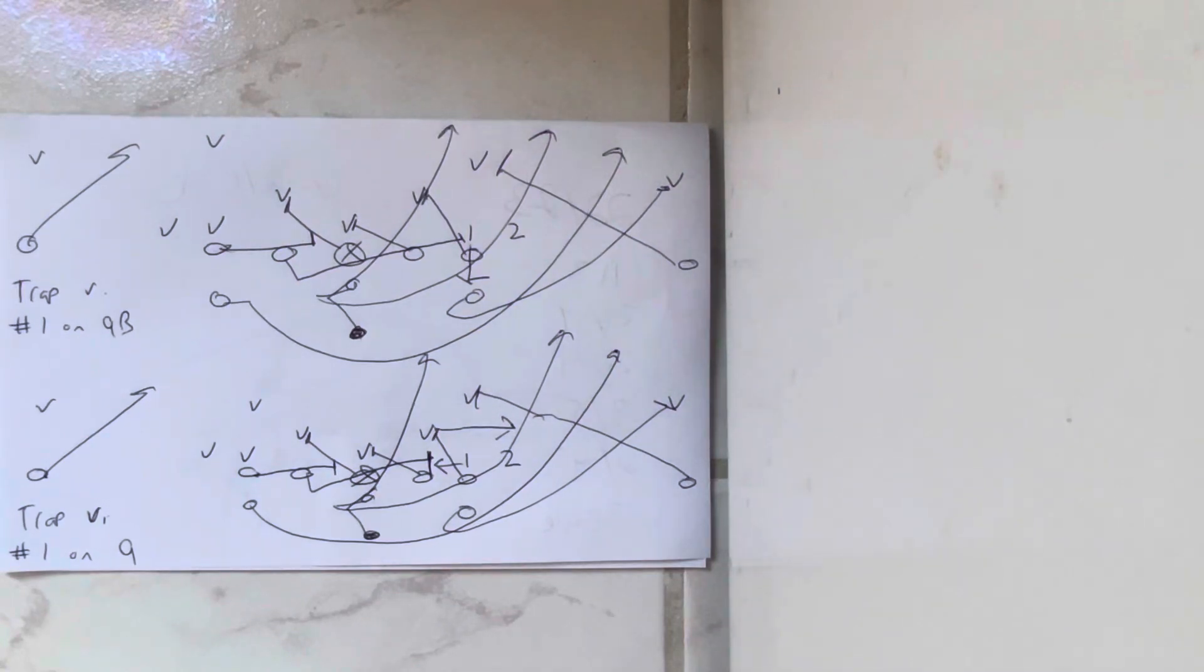It was basically the trap into the void that's created when number one takes the quarterback. But what they learned, this school, and this coach told me this, I won't say which school, but it's one of the Division I triple option schools said we found out that when number one took the B back, trap worked better.